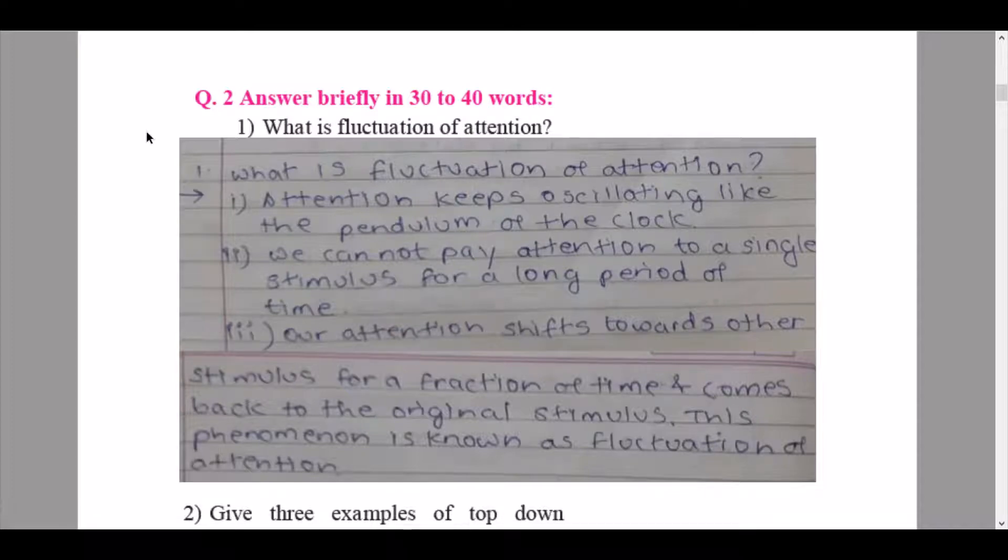So here the first pointer is attention keeps on oscillating like the pendulum of the clock. Second pointer: we cannot pay attention to a single stimulus for a long period of time. Our attention shifts towards other stimulus for a fraction of time and comes back to the original stimulus. This phenomenon is known as the fluctuation of attention.